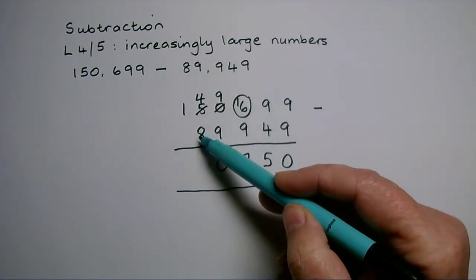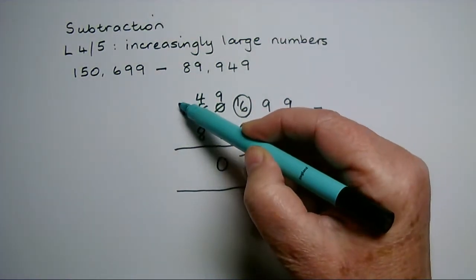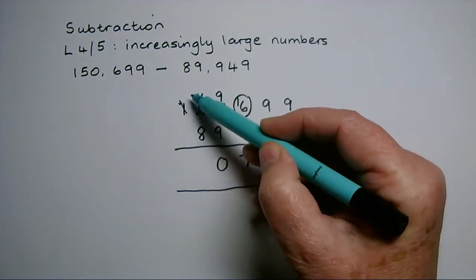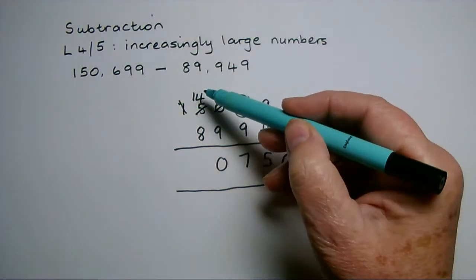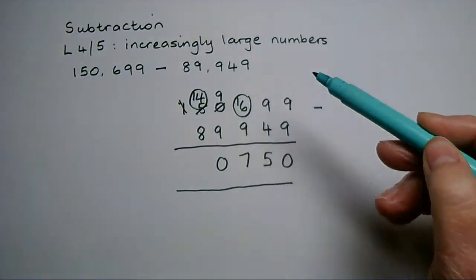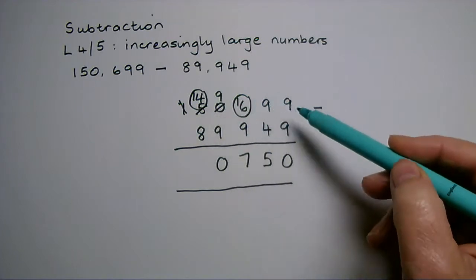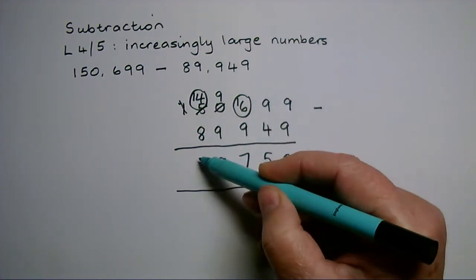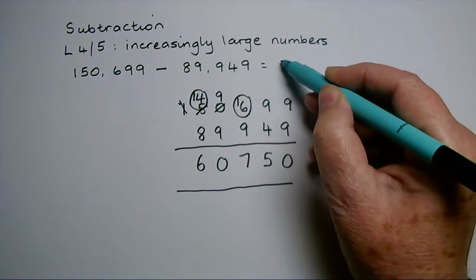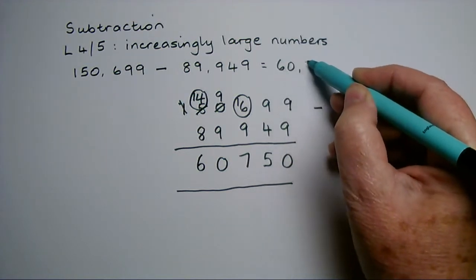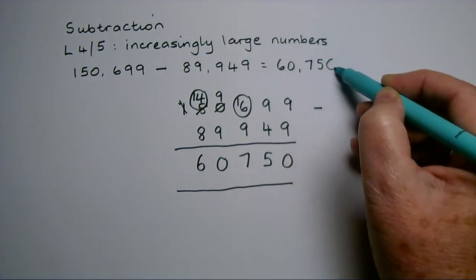So I'm going to turn that hundred thousand into ten thousands. I've now got fourteen ten thousands. Fourteen take away eight is going to leave me six, so I'll have for my answer sixty thousand seven hundred and fifty.